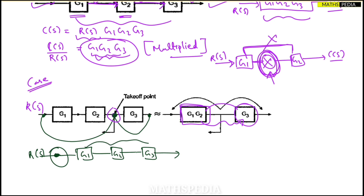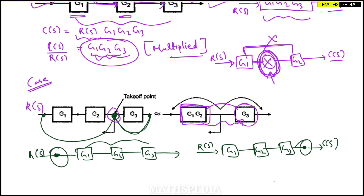Alternatively, if we shift the take-off point to the right, past G3, the diagram becomes: R(s) → G1 → G2 → G3 → take-off point → C(s). Now G1, G2, G3 are directly connected in series and can be reduced to a single block G1·G2·G3. However, you cannot simply shift the take-off point without applying the proper shifting rule, which we will discuss in the upcoming session.